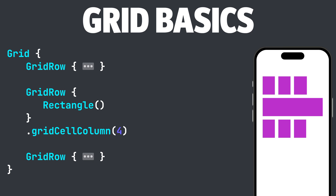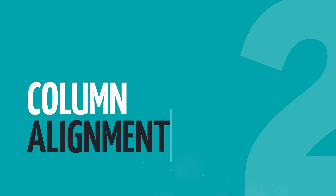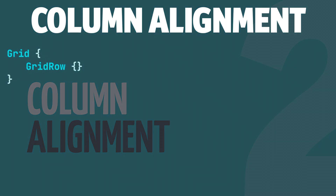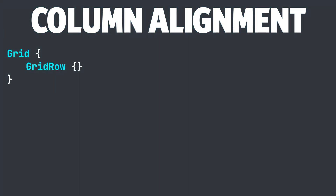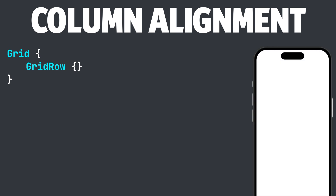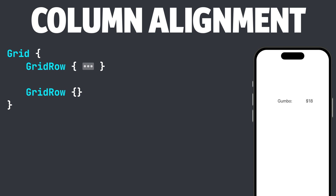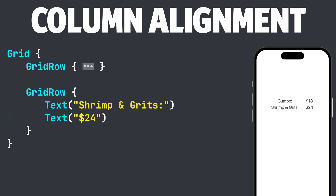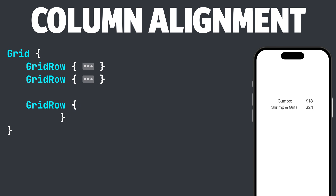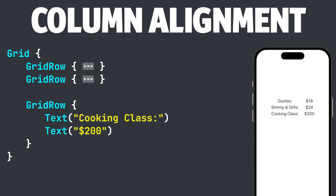There are a few more modifiers we can use when working with grid. We can modify grid columns with the .gridColumnAlignment modifier. Let's look at another grid example. In this grid example, we have three grid rows with two columns of text. In the first grid row we have Gumbo and $18. In the second grid row we have Shrimp and Grits and $24. And in the last grid row we have Cooking Class and $200.